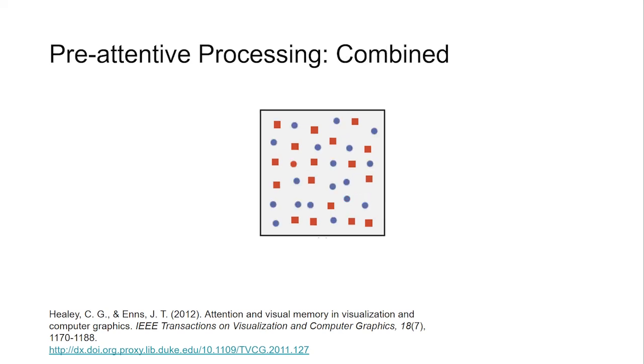But if you try to find the red circle amongst a set of distractors, the process becomes attentive or serial. You essentially have to evaluate each single icon separately to see if it meets the criteria of both red and circle. The power of pre-attentive processing is diminished or entirely eliminated when you have two conflicting styles of visual representation.